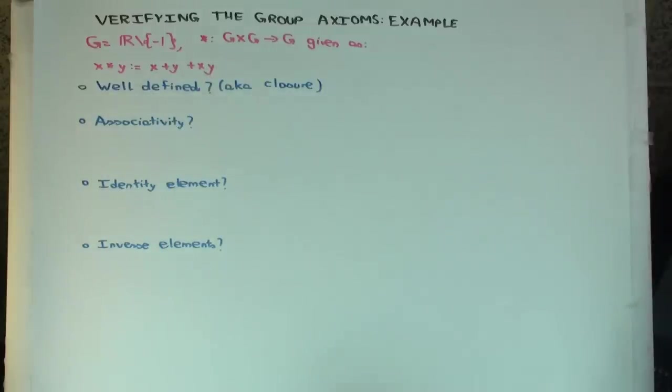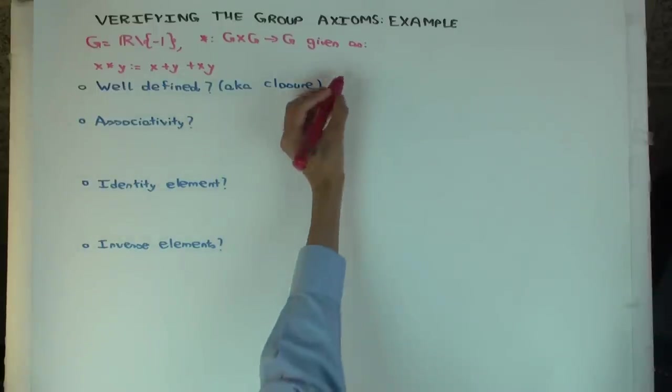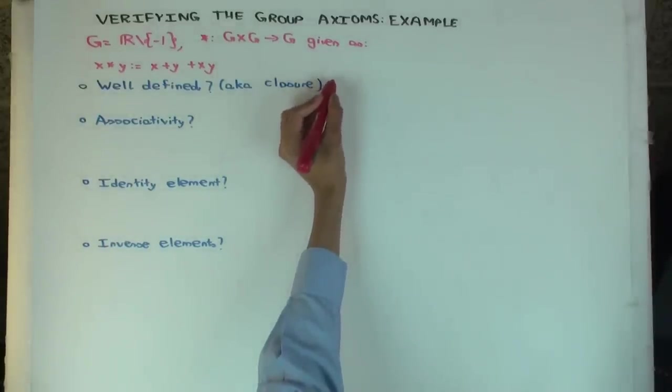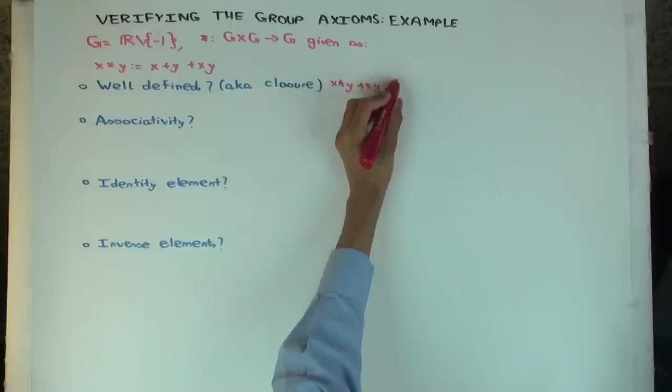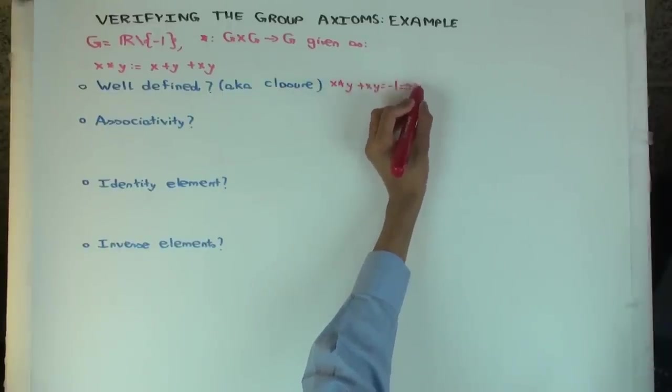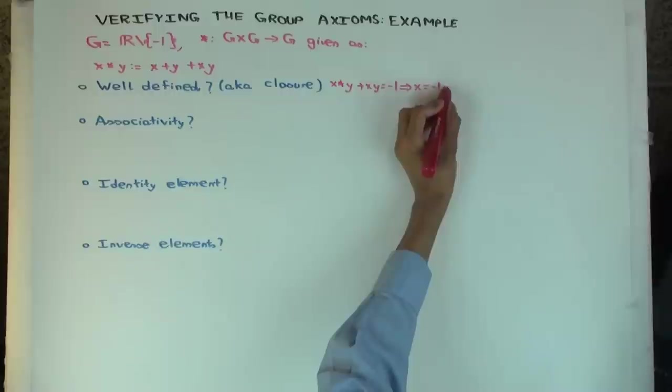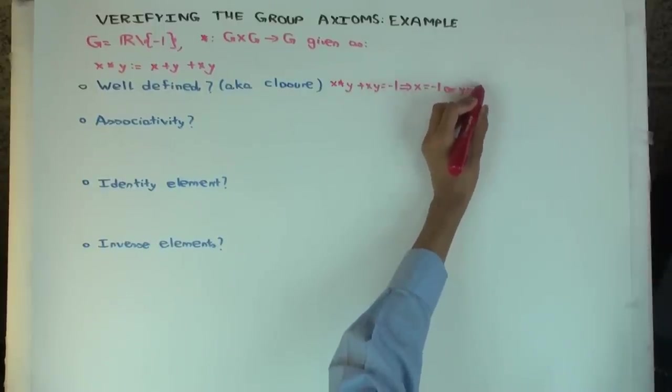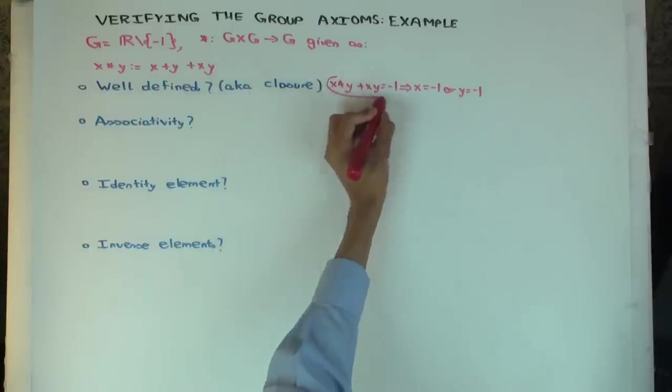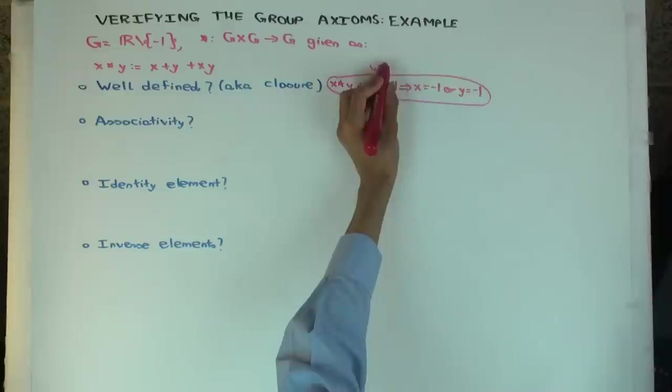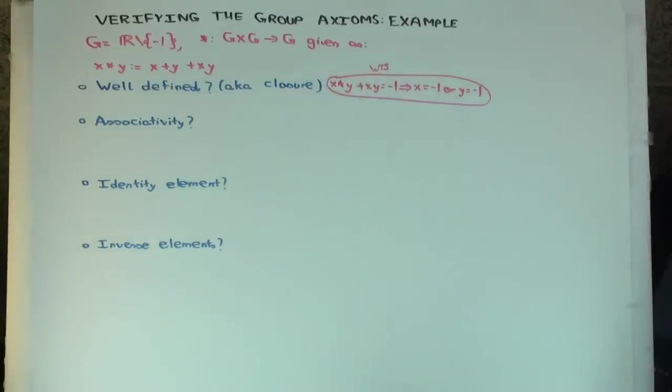Can be negative 1. So we have to make sure that problem doesn't exist. So we want to check that x star y is negative 1 would force x equal negative 1. So x plus y plus xy equals minus 1 should imply that either x or y is already negative 1. That would mean that if you start with things which are not negative 1, then you cannot get negative 1. Let's do this.